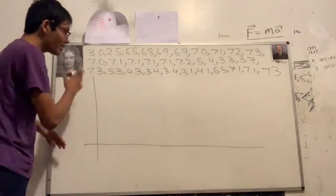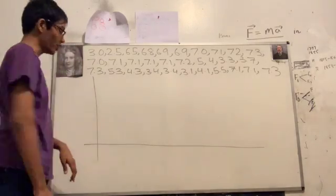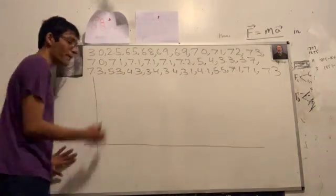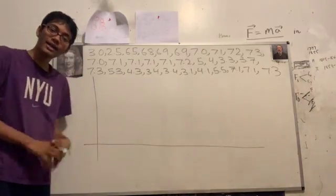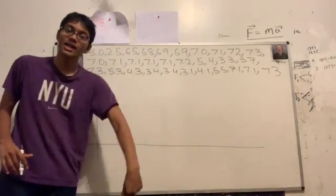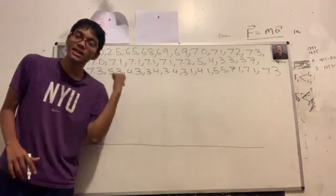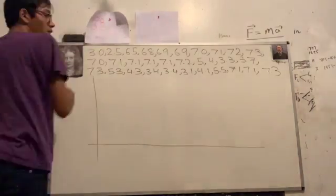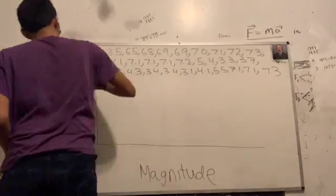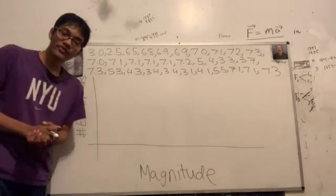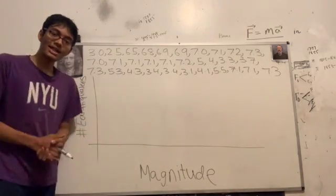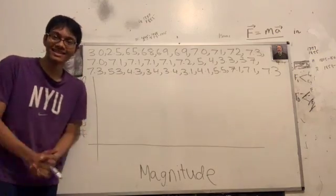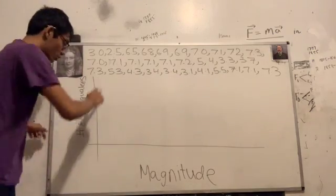Alright folks, so I've got my two axes for the histogram. I've got my x-axis, my y-axis, but this is a traditionally bad graph. Why? It doesn't have two things, an x-axis label and a y-axis label. Let's go ahead and put them down.